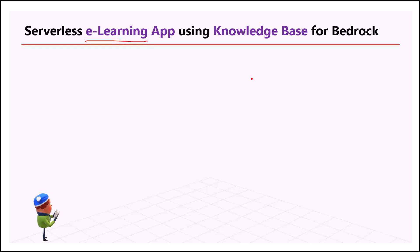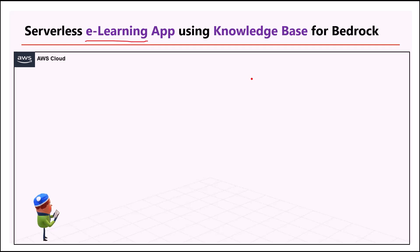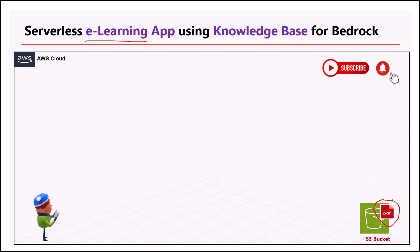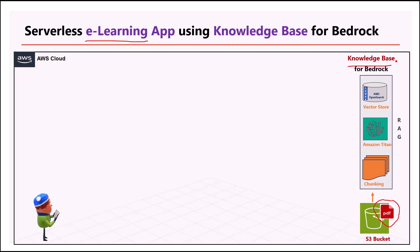We're going to build this application on AWS. The first thing we are going to do is create an S3 bucket where we're going to load all the documents around various AWS services which the employee needs to learn to carry out the migration. Once we have created this S3 bucket, the next thing we're going to do is create a knowledge base. Knowledge base helps you build RAG-based applications and it carries out certain tasks behind the scenes — chunking, creating vector embeddings, and storing it in the vector store.